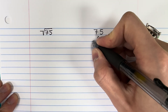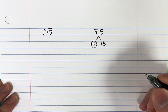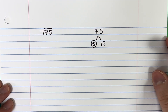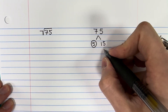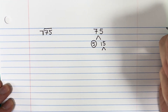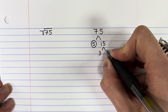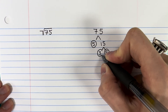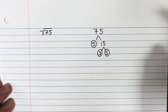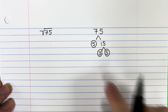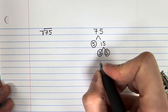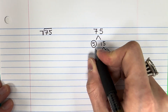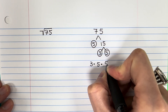5 is a prime number, meaning I cannot divide 5 by any number other than 1 and itself. 15 is not prime — there are two numbers I can multiply to get 15, and that is 3 and 5. 5 is prime, and 3 is also prime because I cannot divide 3 by any number other than 1 and itself. So my factors are 3 times 5 times 5.